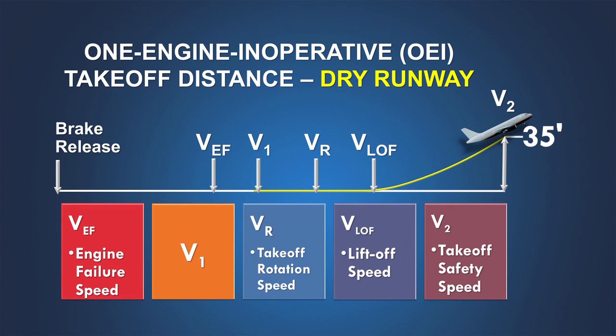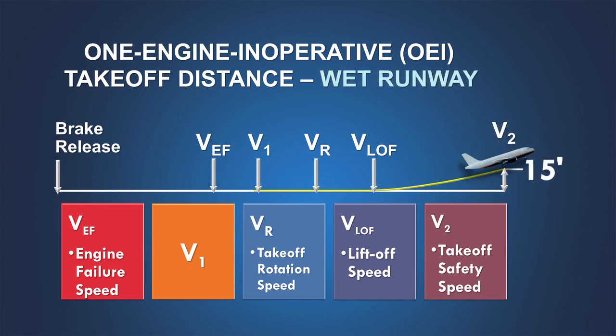On a dry runway, the one-engine-inoperative takeoff distance ends when the airplane reaches a height of 35 feet above the runway. To reduce the V1 speed — both to rebalance the probability of rejecting a takeoff on a wet runway versus continuing that takeoff, and to reduce the speed at which braking would be attempted — the regulations allow us to consider that the wet one-engine-inoperative takeoff distance is complete when the airplane reaches 15 feet, rather than the 35 feet required for a dry runway.